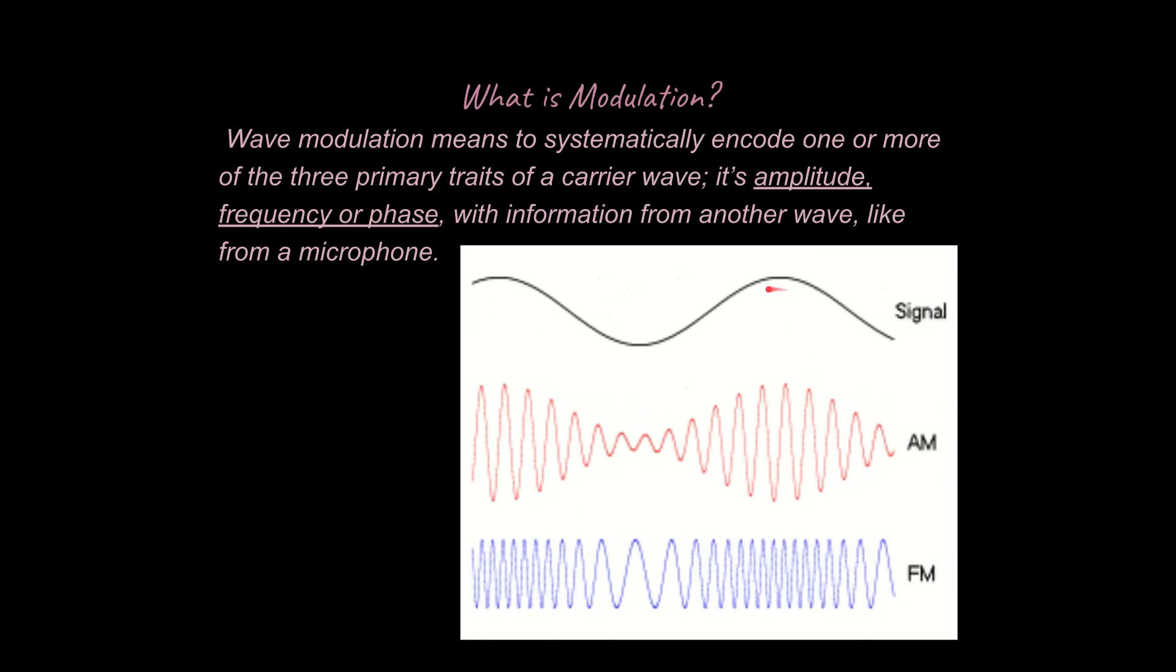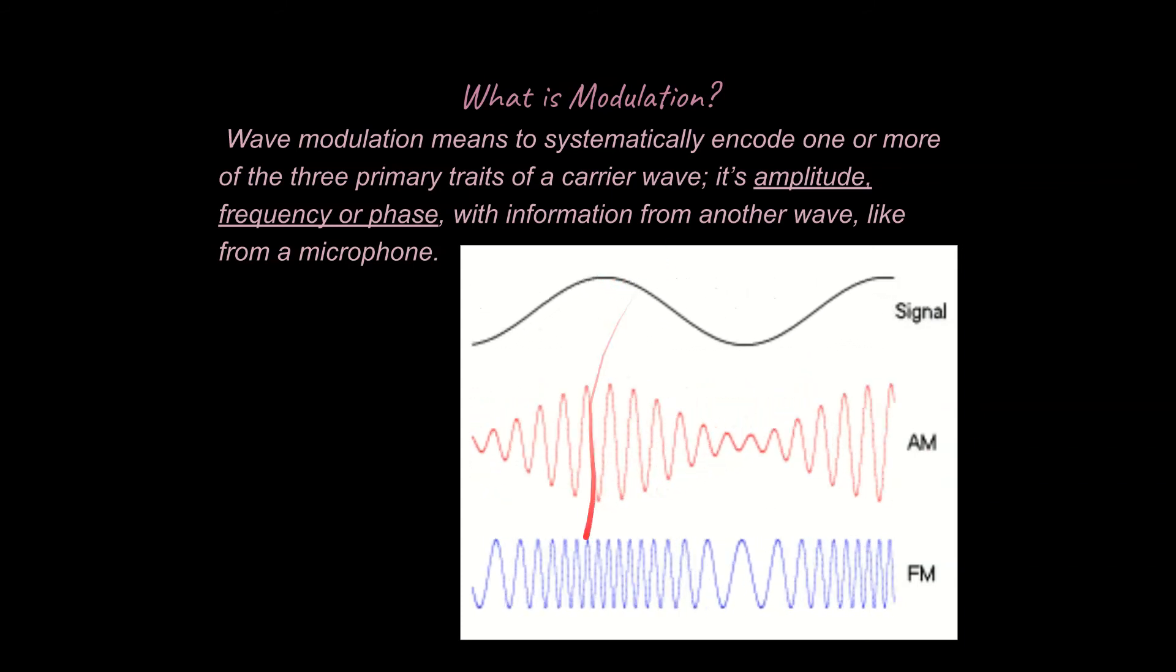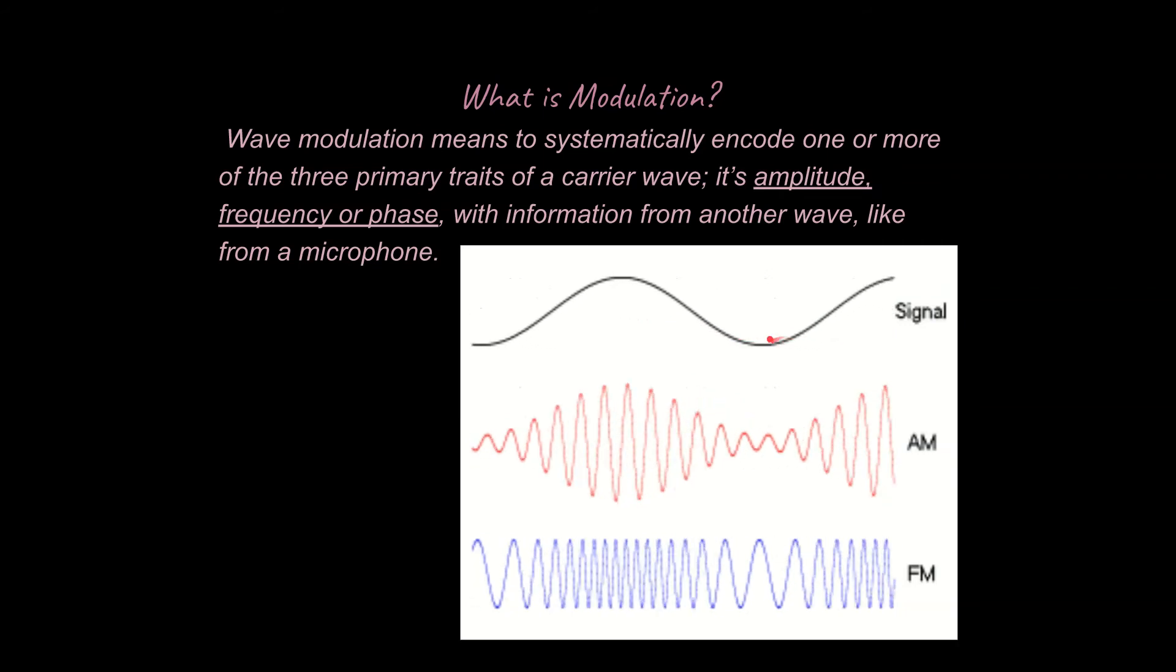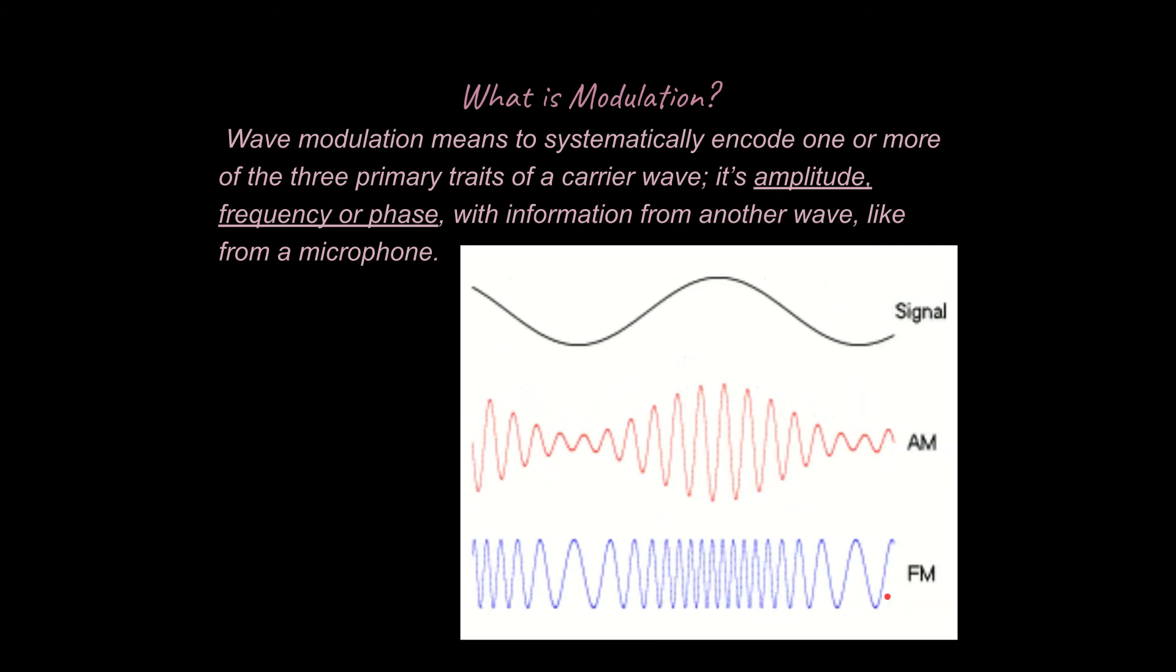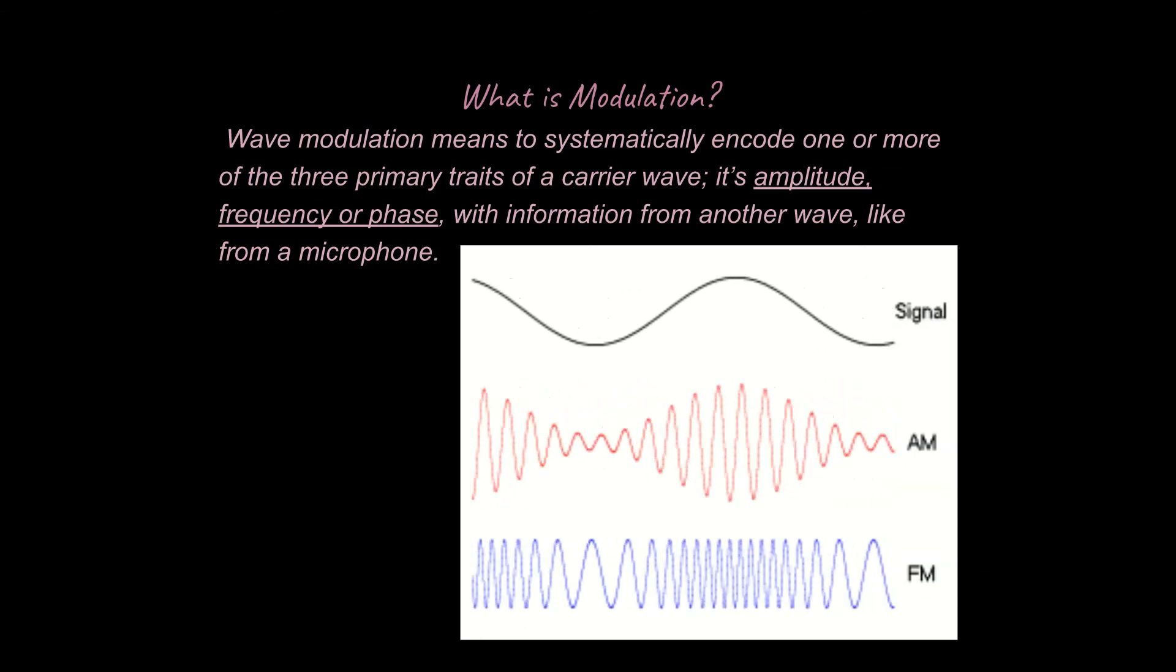Whereas FM works differently, the crest right here is going to correspond to a greater frequency, and the trough right here is going to correspond to a lesser frequency for a frequency modulated wave, or an FM wave.